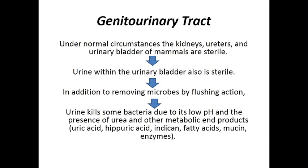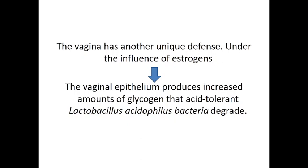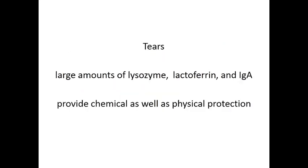In the genitourinary tract, urine is sterile and flushes through the kidney and urinary tract, removing any microorganisms trying to enter. Urine also contains urea, uric acid, and hippuric acid, which are highly toxic to microorganisms. Additionally, in the vaginal tract, estrogen stimulates elevation of glycogen in epithelial cells, which supports Lactobacillus species — the normal flora of the vaginal epithelium — that in turn protect this region.